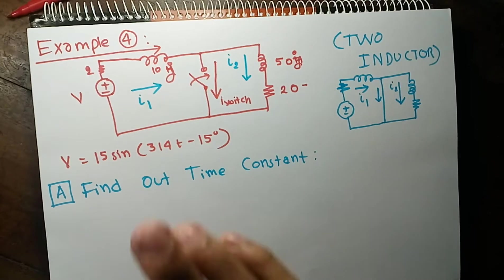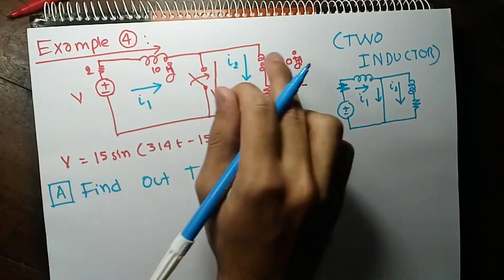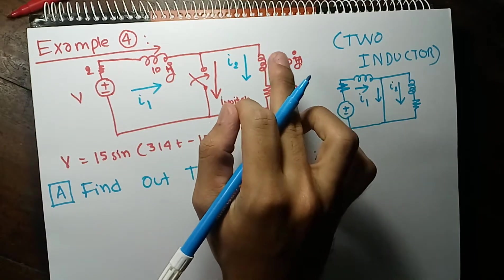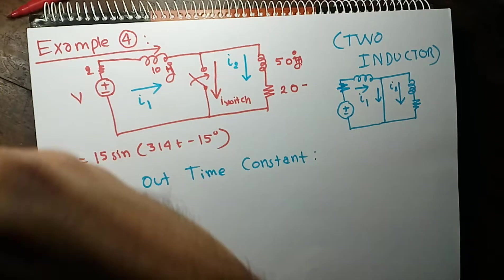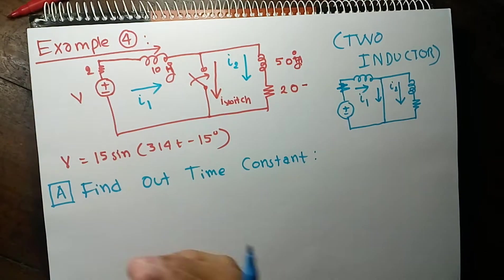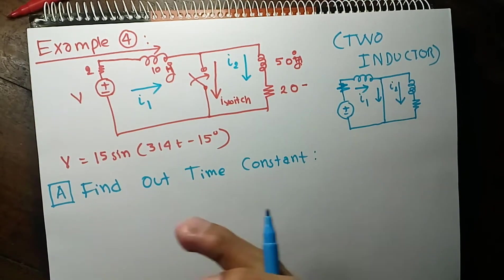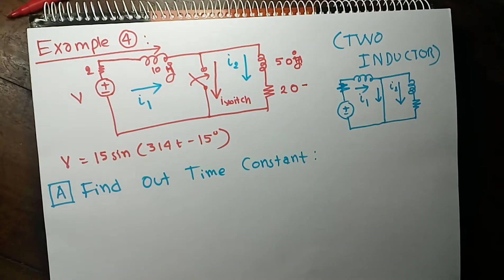This is example number 4 from the slide. In this example, there are two inductors involved. We haven't seen the method for solving transients involving two inductors, but we can solve it with the knowledge we have from the one-inductor case.